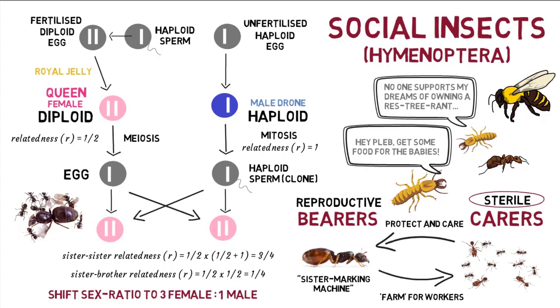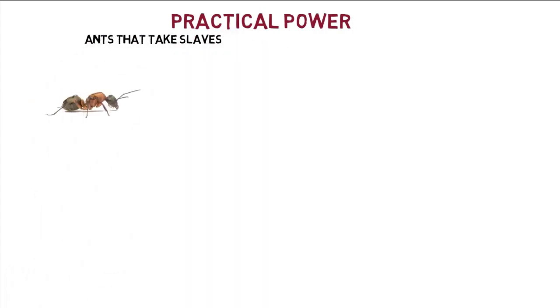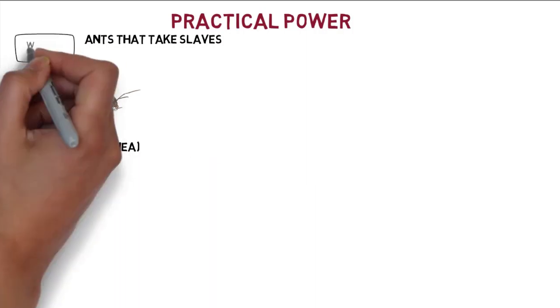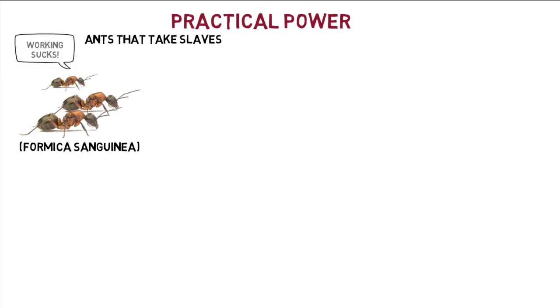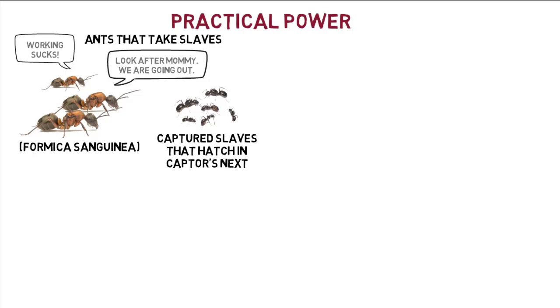Dawkins concludes that the conflict of interest seems to be won by the workers, unsurprisingly given the workers have more practical power than the queen as guardians of the nursery. Examining the opposite scenario where the queen has more practical power, Trivers and Hare investigated species of ants that take slaves. The workers of the slave-making species are not good at working but are specialized at raiding ant colonies of other species and carrying off the unhatched young. The captured slaves hatch in the captors' nest and, although unrelated to the queen, perform all the colony's work — cleaning, foraging, and caring for the brood — while the slavers go on further slaving expeditions.